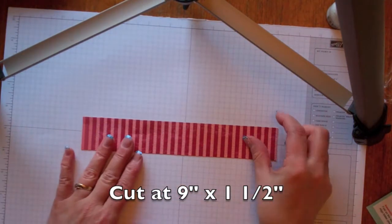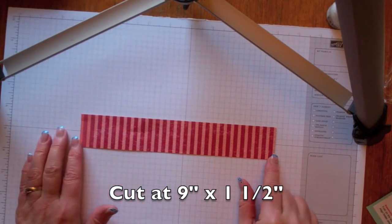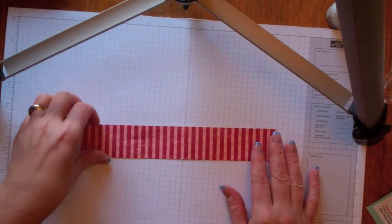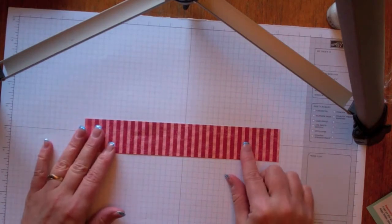You're going to start with a piece of cardstock that's nine inches by one and a half. This is the DSP, International Bazaar, which I love.